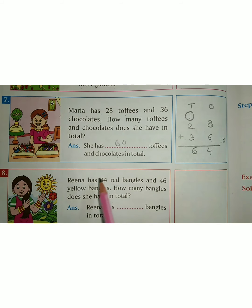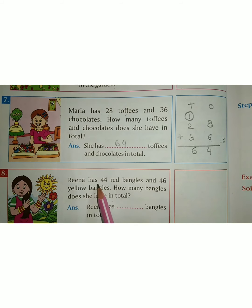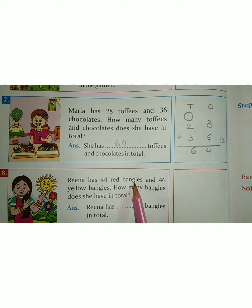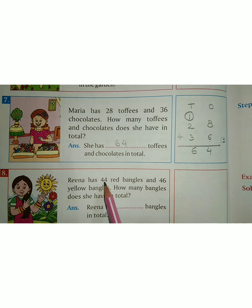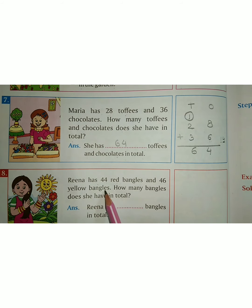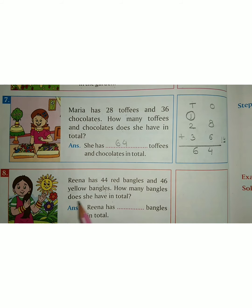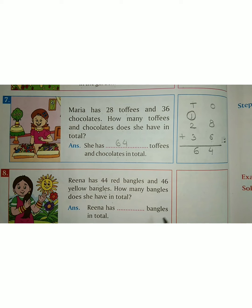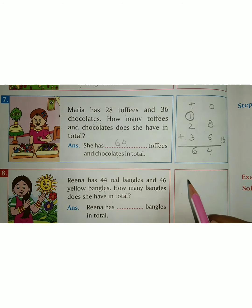Next: Reena has 44 red bangles. Reena ke paas 44 red bangles hai and 46 yellow bangles hai. How many bangles does she have in total? Uske paas total kitne bangles hai?